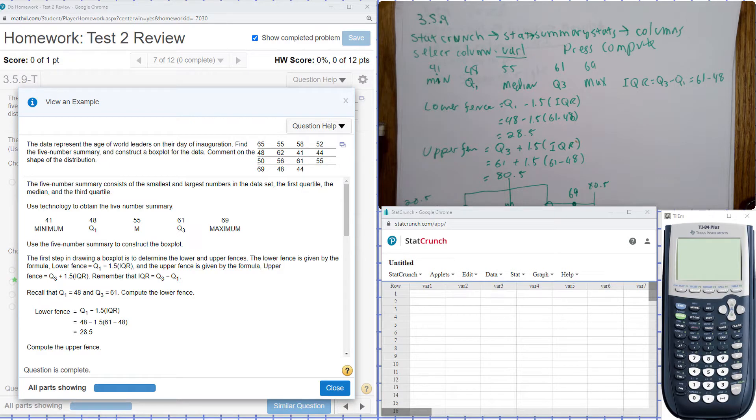So you can see there you have the Q1, Q2, Q3. The M is the Q2 median. We have a minimum and maximum number there. So you look at our data, go to StatCrunch.